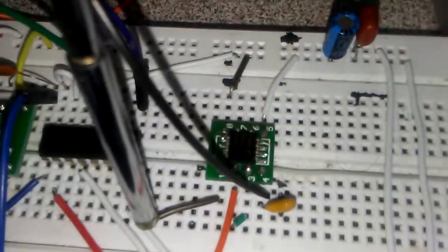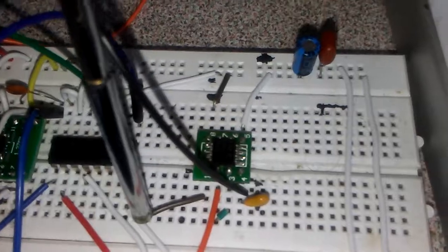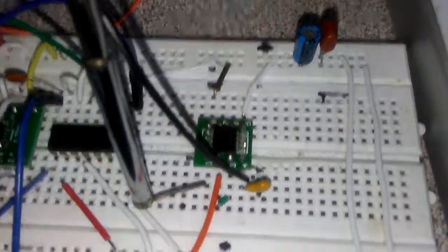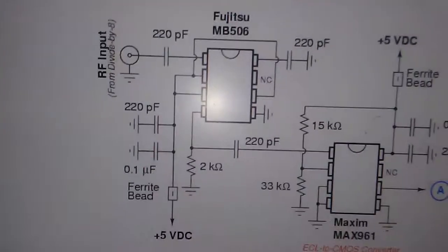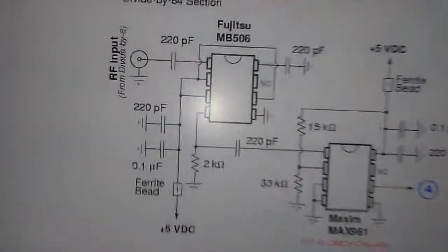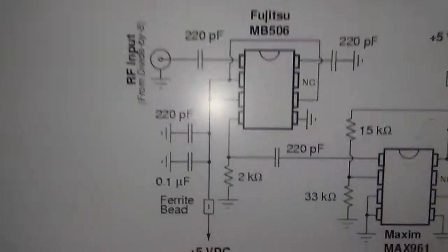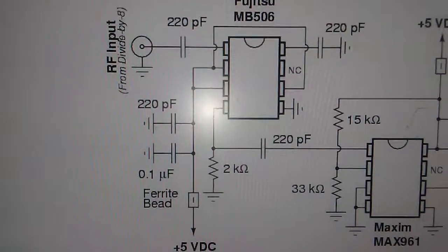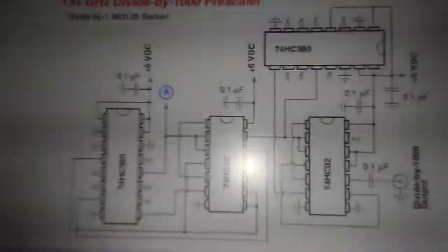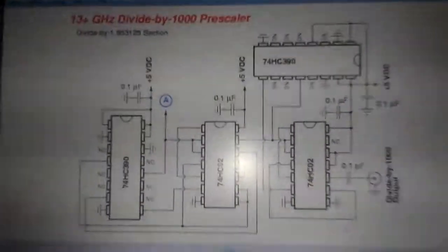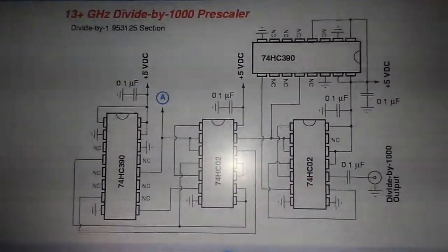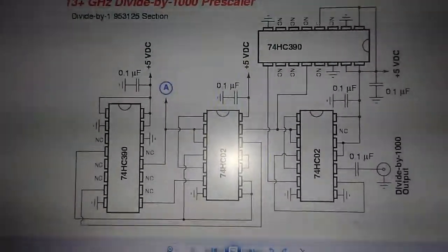I have one prescaler IC, it is MB501L, and this is the schematic that I use for this project. It's very simple, and the output is connected to the project with the four ICs together as prescaler RF source.